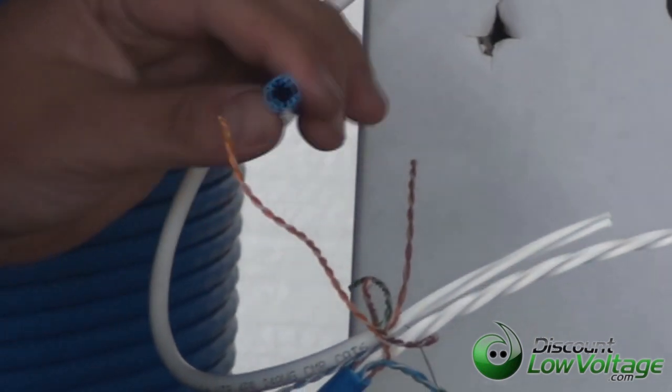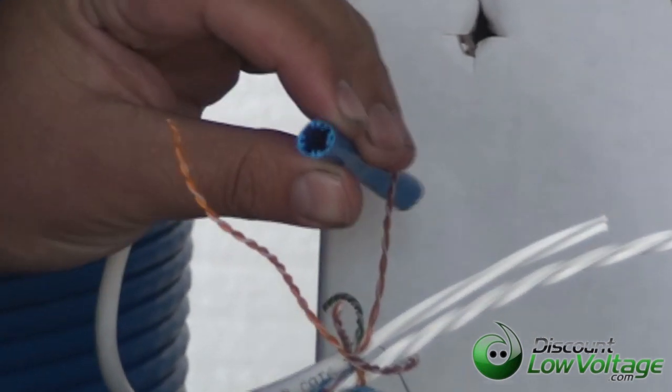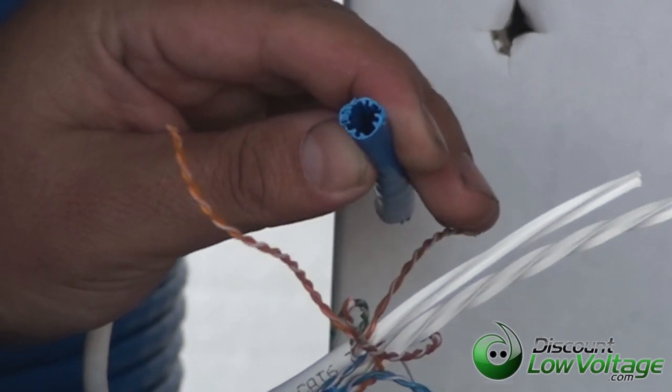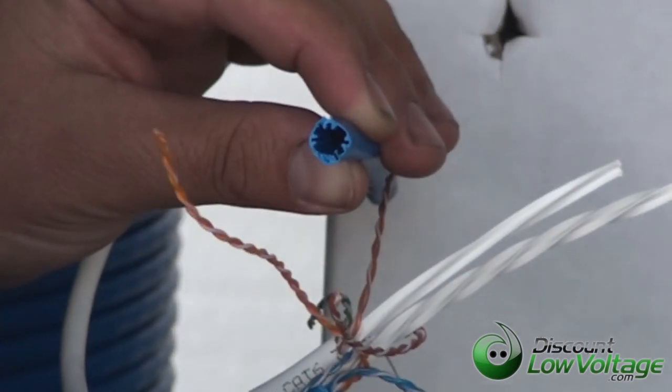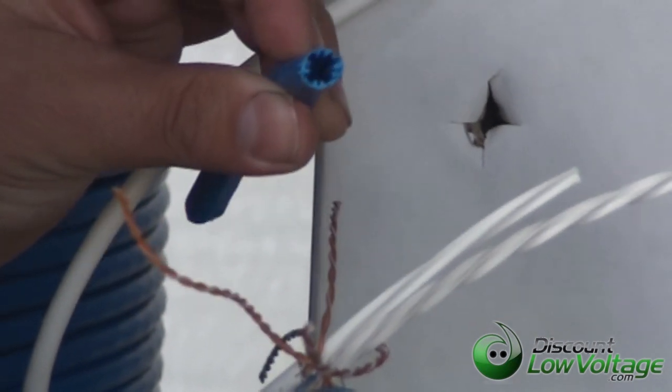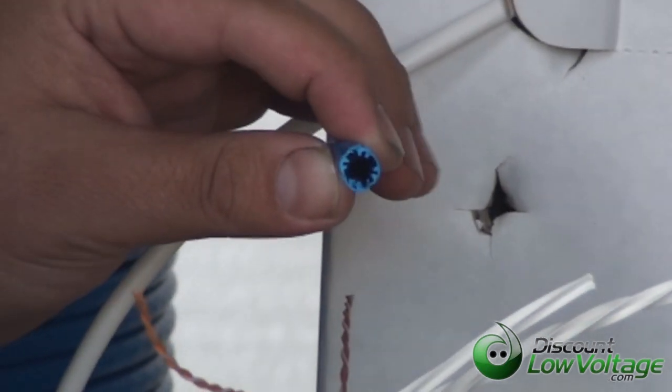Also the jacket for the Category 6A even has kind of these little additional bends in there to keep the pairs twisted with some support to provide best speeds over long pools, over long distances.